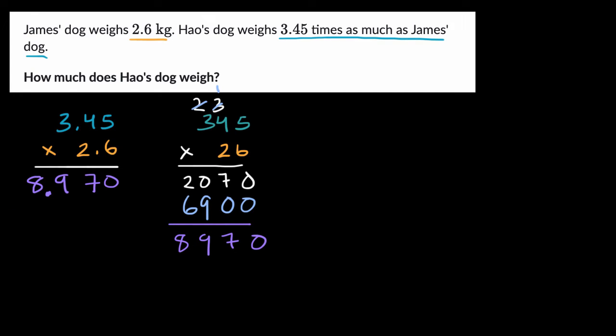But why does that make sense? Well, one way to think about it is to go from 3.45 to 345, we would have to multiply by 100. We'd have to move this decimal over to the right twice. And to go from 2.6 to 26, we'd have to multiply by 10. We'd have to move this decimal over to the right once.